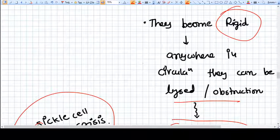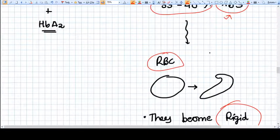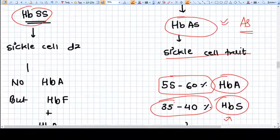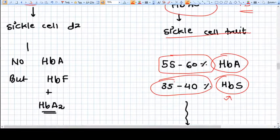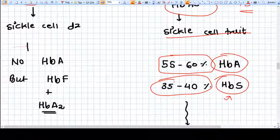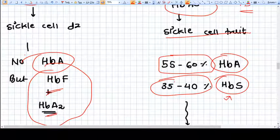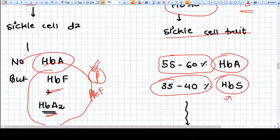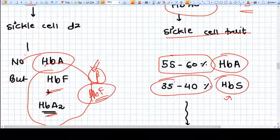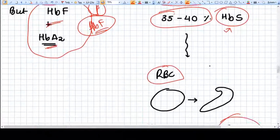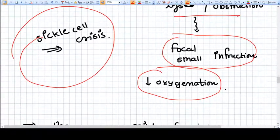This is a sickle cell crisis, which happens because of obstruction of small blood vessels because of sickle cell RBCs. If we talk about sickle cell disease, we will get no amount of hemoglobin A, normal hemoglobin, but we will only have HbF and HbA2 because beta chains are defective. We don't have beta chains at all, so HbF will be there and HbA2 will be there, and a large amount of HbS will be there.